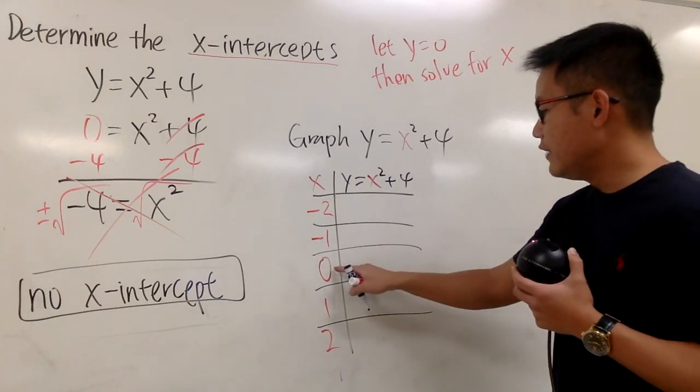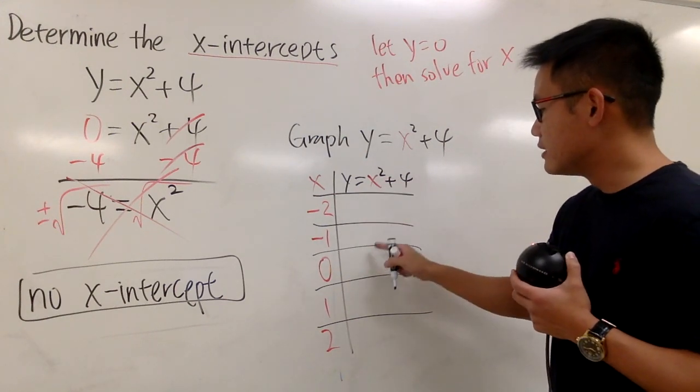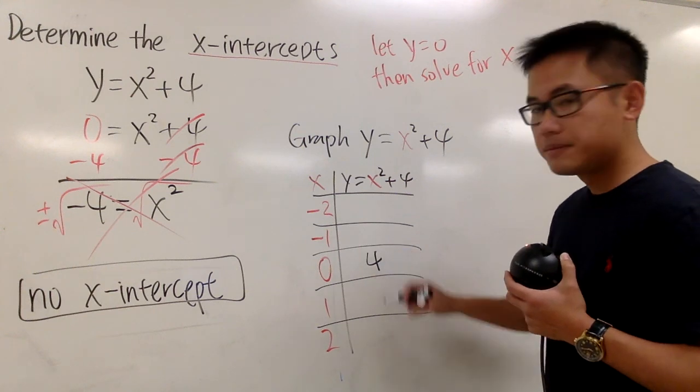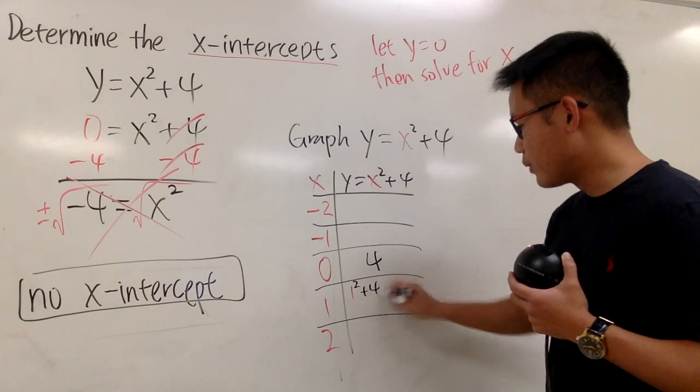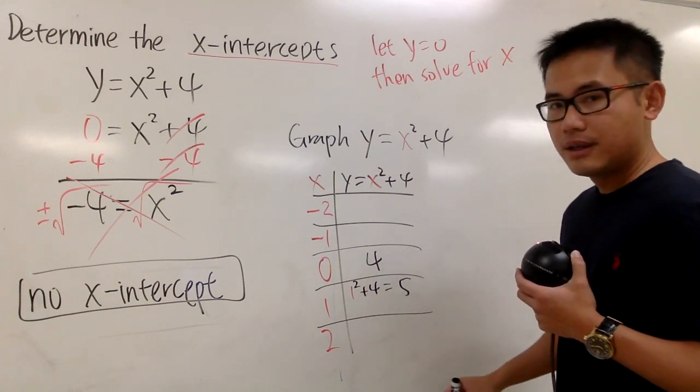You can do this quickly. If you plug in 0 for x, you get 0² + 4 = 4. If you plug in 1, you get 1² + 4 = 5.